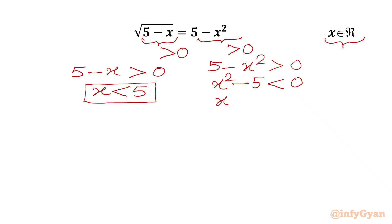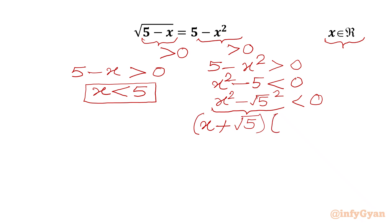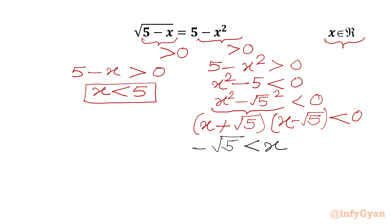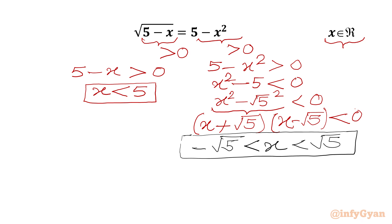Now we will calculate the condition from the right hand side: 5 minus x² should be positive. We apply the difference of two squares identity and write (x + √5)(x − √5) < 0. So x must lie in the interval (−√5, +√5). Taking the intersection of both conditions, our final domain is x in that interval.